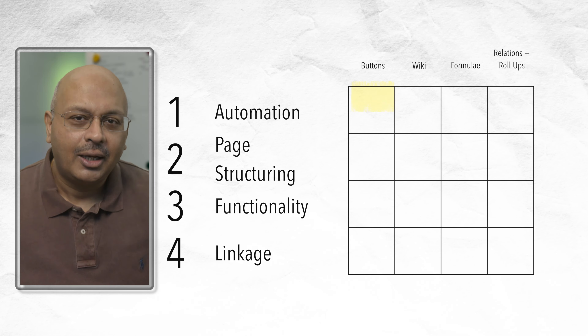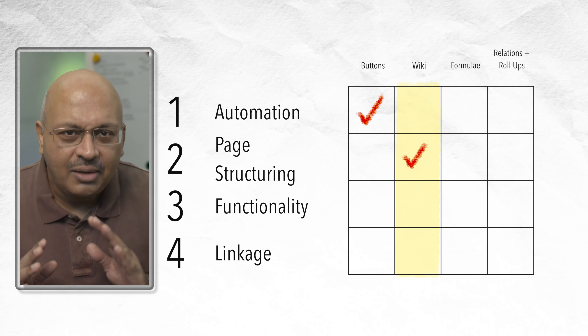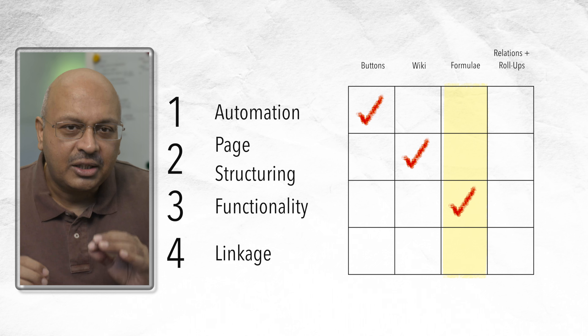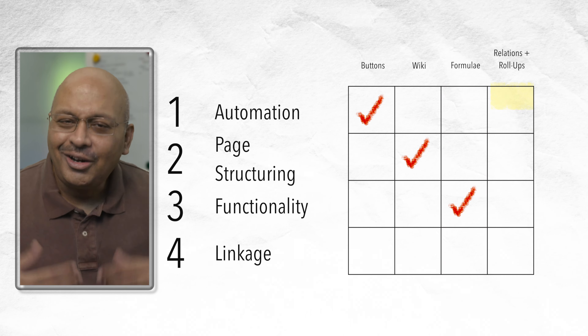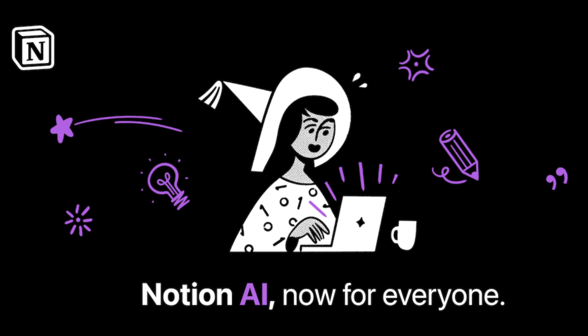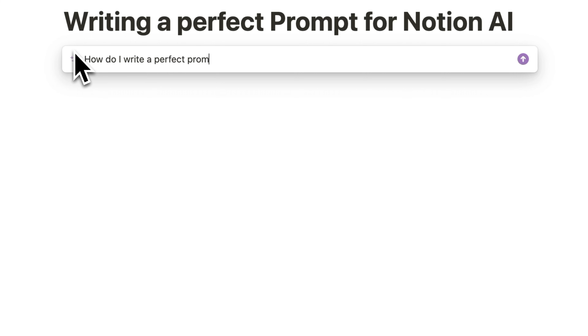Most Notion tools solve a specific problem — buttons solve an automation problem, Wiki solves a database and free-from-page structuring problem, Formulas solve missing database functionality, and Rollups and Relations solve a linkage problem. There is one functionality that has a much wider application, and that's Notion AI, which helps across the entire Notion workspace. The challenge is coming up with a perfect set of prompts to achieve that solution.